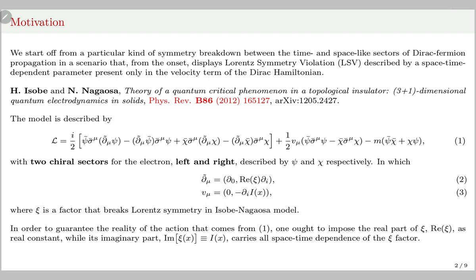Our motivation comes from this paper published by Isobi and Nagaoussa. In that paper they consider a special kind of Lorentz symmetry violation described by a constant parameter present only in the velocity term of the Dirac Hamiltonian.